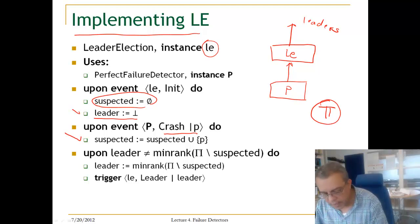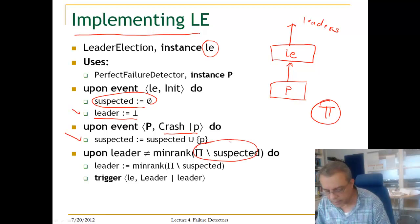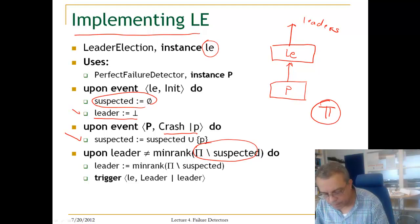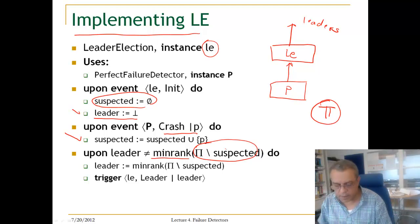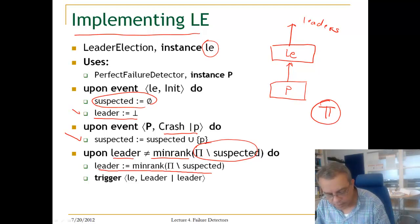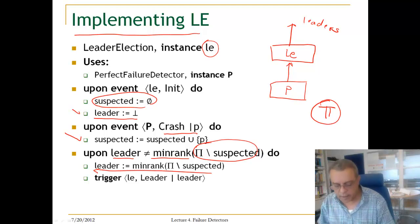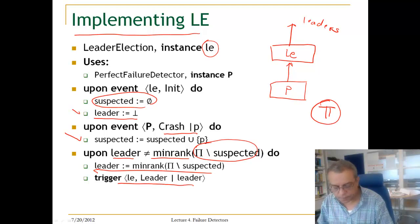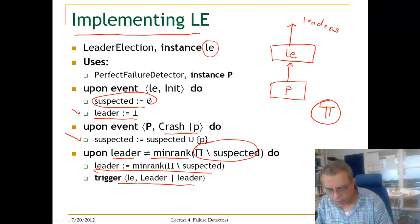Whenever the current alive processes — that is, PI minus the suspected set — have a minimum rank node that is not equal to the current leader, we change the leader by picking the one with the lowest rank and trigger a new leader indication.